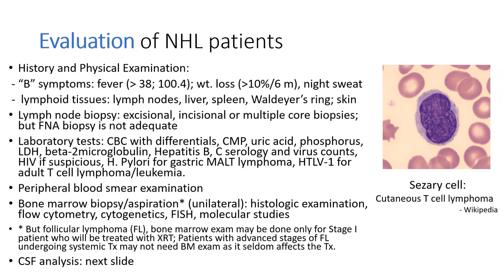For evaluation of patients before treatment, a good history and physical is important — asking patients about B symptoms and checking the lymphoid tissues. For biopsy, lymph node excisional biopsy is the best. Incisional or multiple core biopsies are acceptable, but not fine needle aspiration, because we need tissue examination. Lab tests include CBC, CMP, uric acid, phosphorus, LDH, and especially beta-2 microglobulin, which predicts prognosis.